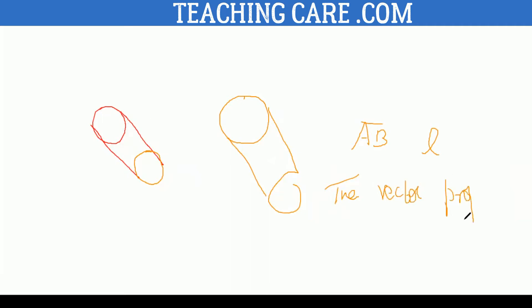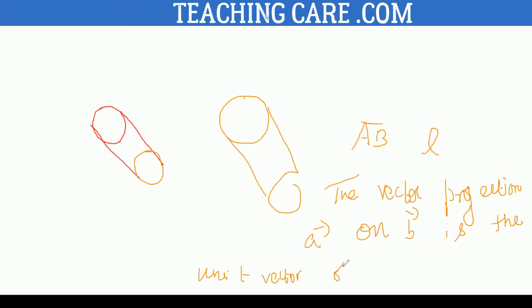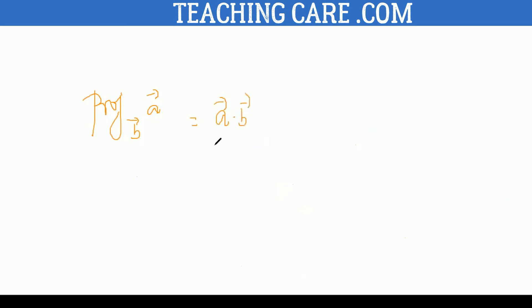You are going to take two vectors. The vector projection of A onto B vector is nothing but the unit vector of B, multiplied by a scalar projection — that means it will follow the direction of B. The scalar projection formula is: projection of A vector over B vector equals A dot B divided by the absolute value of B vector.